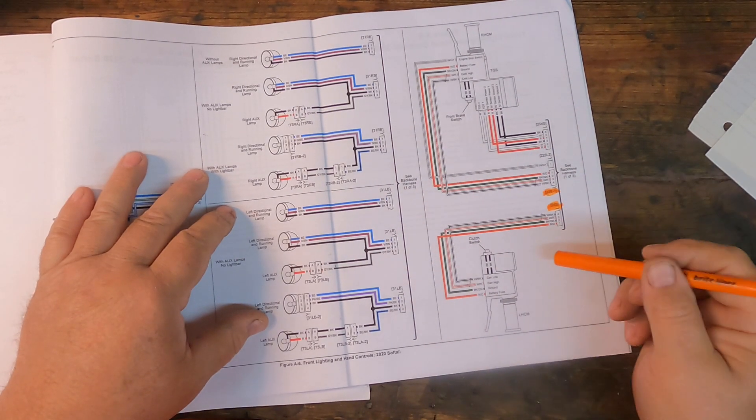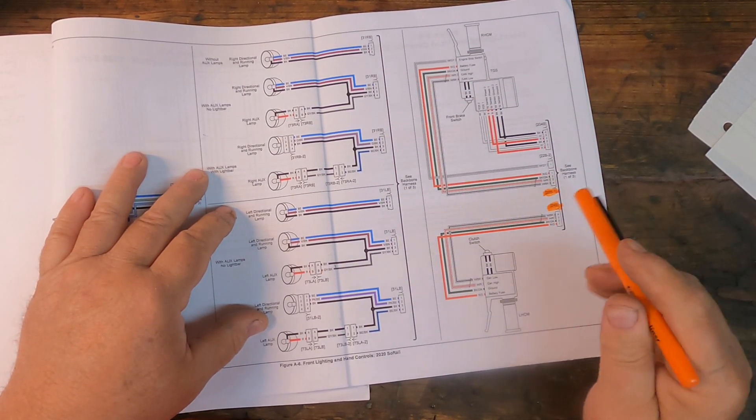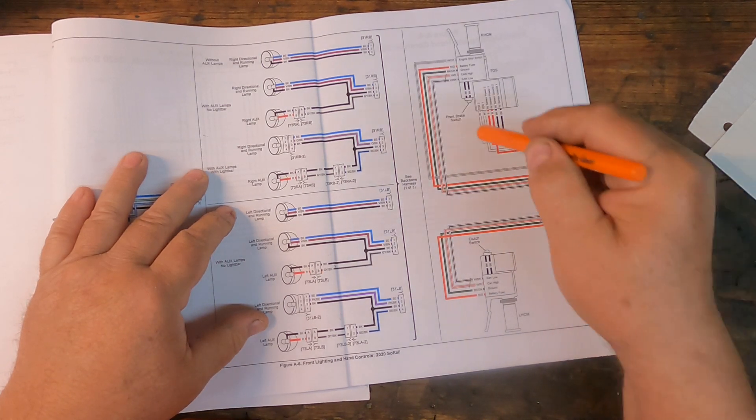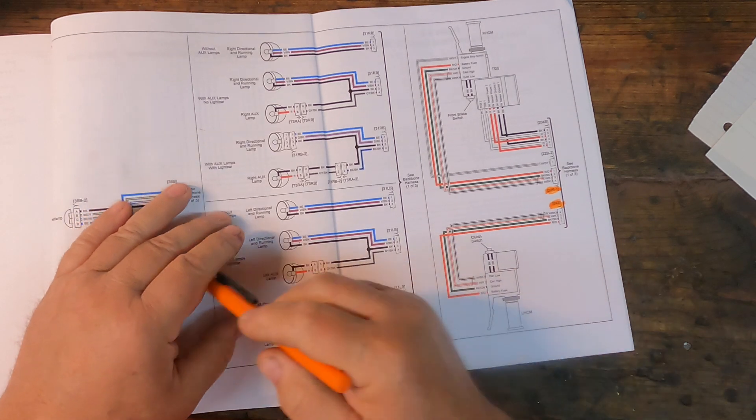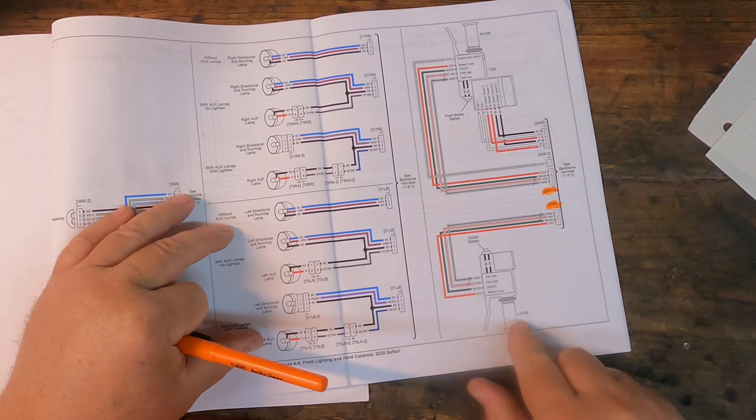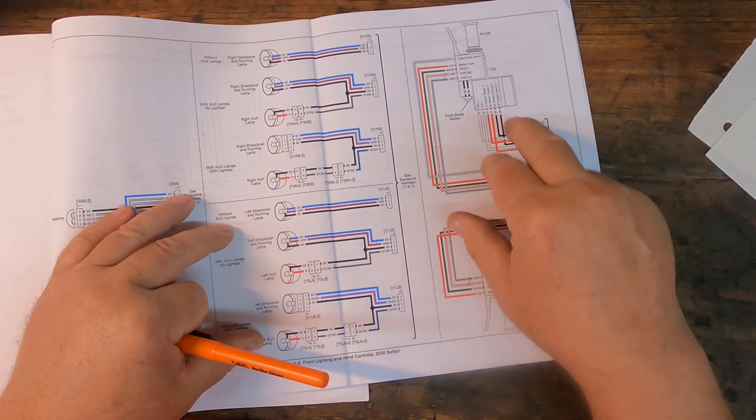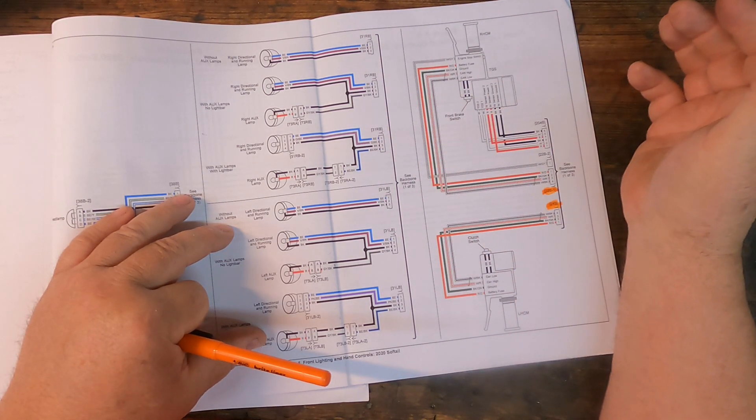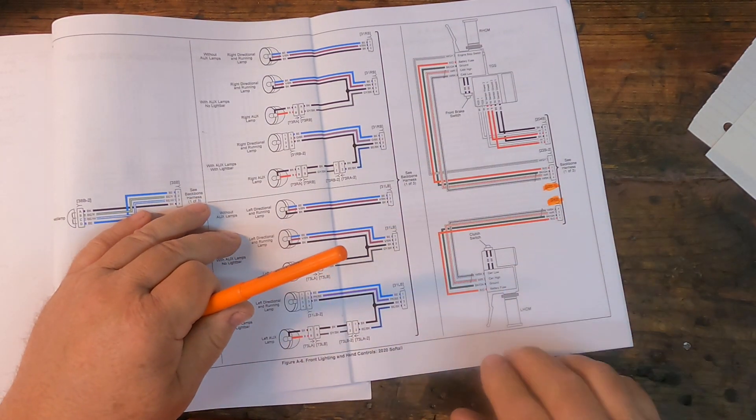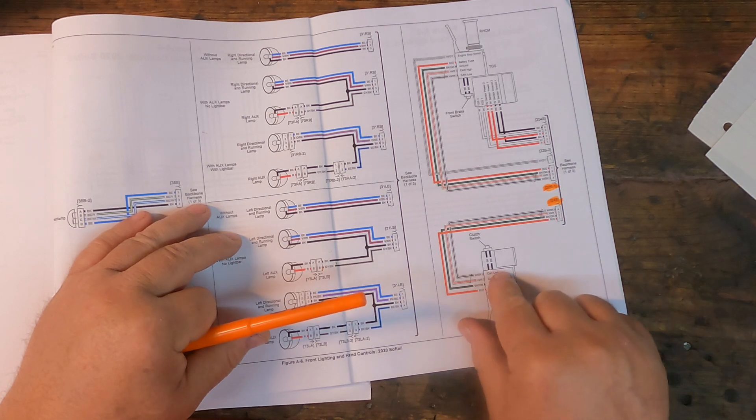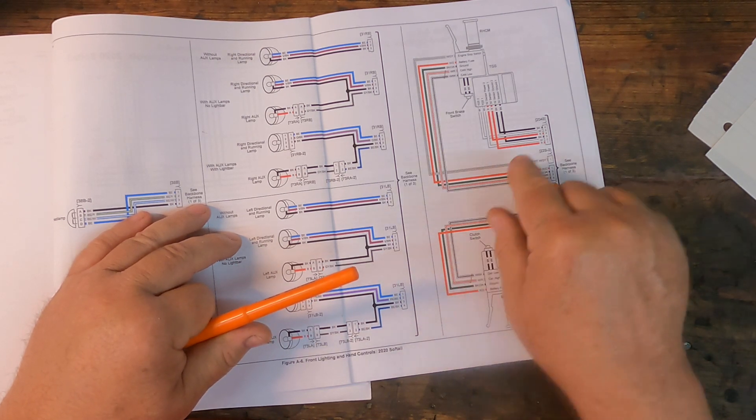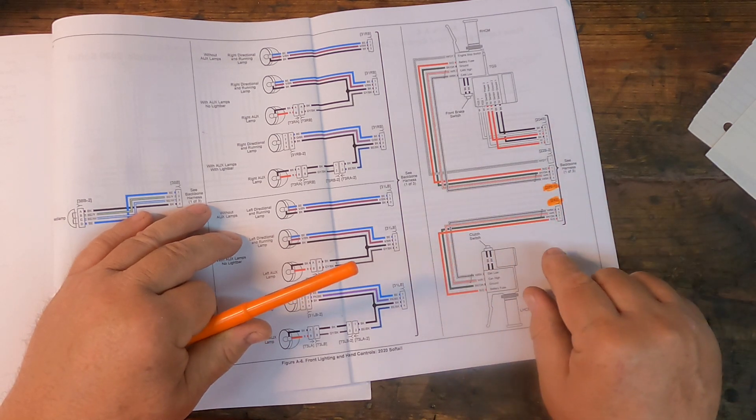Okay, so here is the diagrams that go with the 2020 Milwaukee 8 I was working on. You might have seen bits and pieces of this in last week's video. But anyway, here is the left-hand LHCM, left-hand control module. And over here is the right-hand control module. So anyway, the wires, although named differently over here, are the same on both of them. The colors are the same.